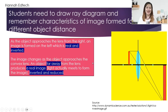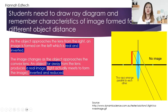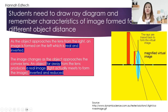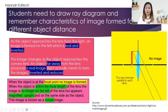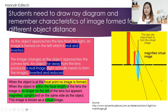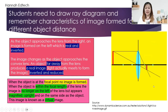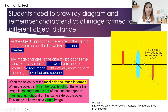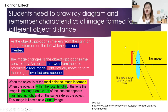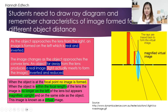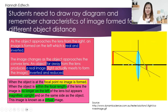Here are the notes. As the object approaches the lens, whenever the image is formed on the other side of the lens, you will see a real and inverted image. When it comes to the focal point, no image will be formed. But when the object is within the focal length, the image is no longer on the lens side — it appears magnified, upright, and it is a virtual image, because there is no intersection on the lens side, only a dotted one.